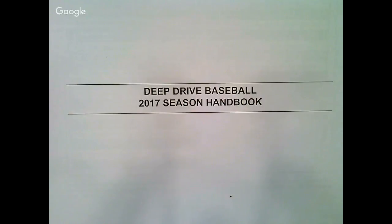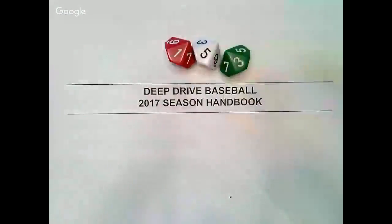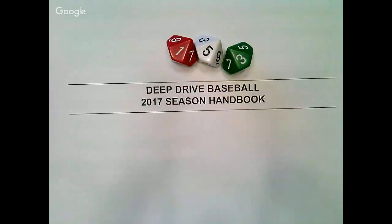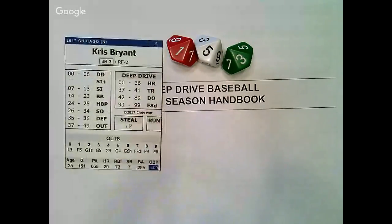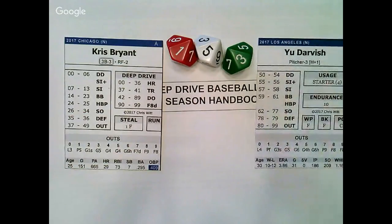Now you know what Deep Drive Baseball is, but how does it work? Each plate appearance of a baseball game is typically resolved with a single roll of three 10-sided dice. Baseball uses a 50-50 game engine — 50% of your rolls will be read off of the batter's card, and 50% off of the pitcher's card.